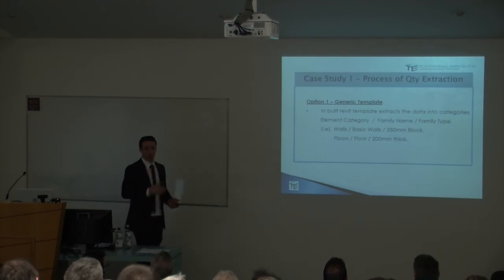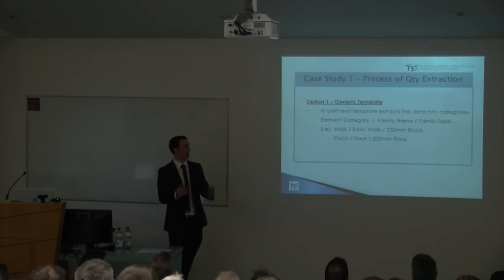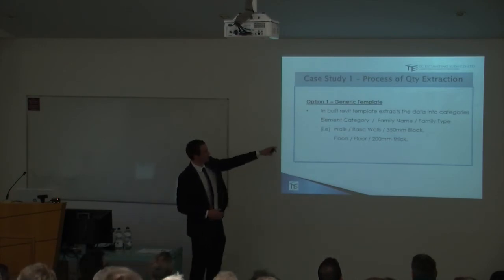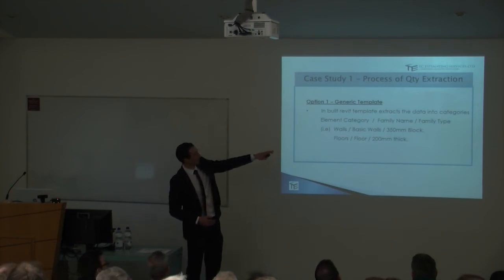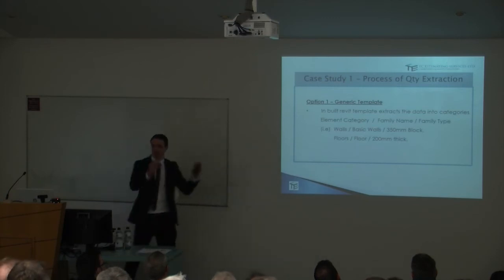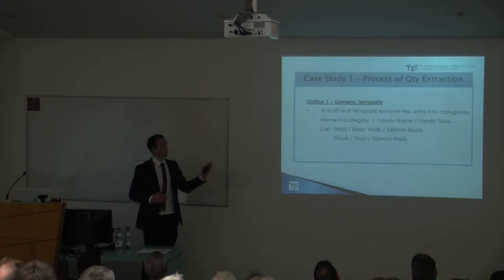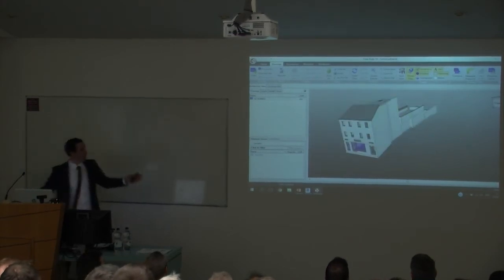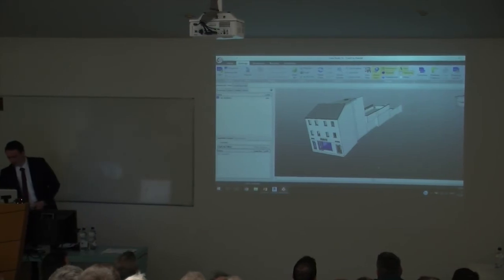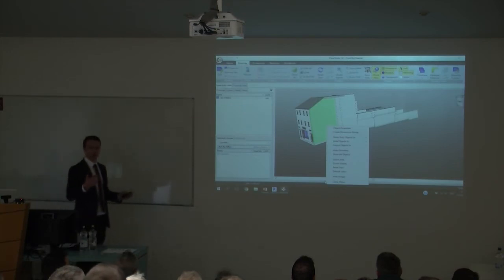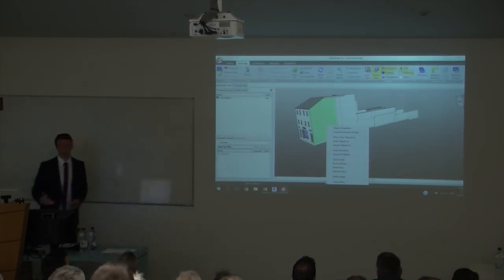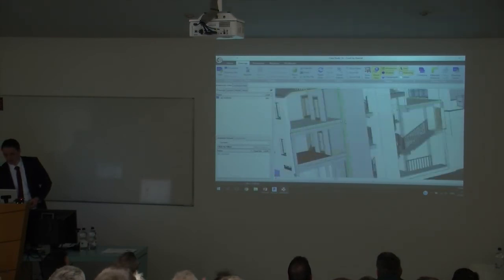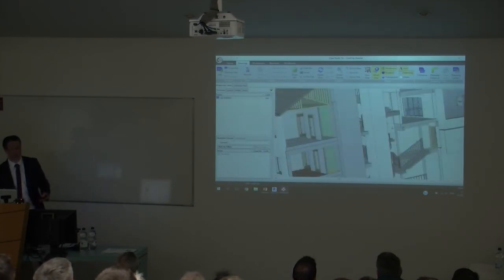There are two options for me to extract quantities. The first is a generic template. With the software I use, Costex, you can automatically extract based on the object property — it'll give me what the wall is, a basic wall, a block, a floor — the element category, family name, and family type. This is the actual model that was built — one block, three storeys, in-situ frame. A very good modeller took about 50 2D drawings and built this model — one single model instead of 50 drawings — modelling all the windows, stairs, doors, lift shaft, and even the roof structure.